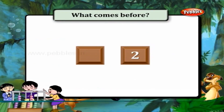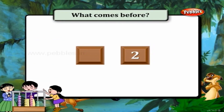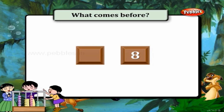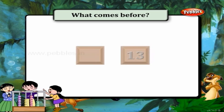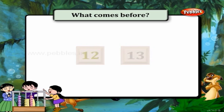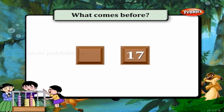What comes before? What comes before 2? Yes, it is 1. What comes before 6? It is 5. What comes before 8? 7 comes before 8. What comes before 13? 12 comes before 13. What comes before 17? Yes, 16 comes before 17.